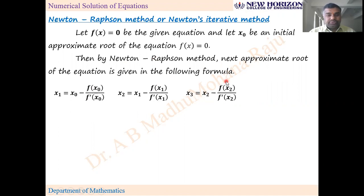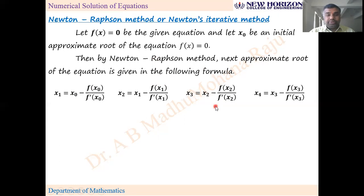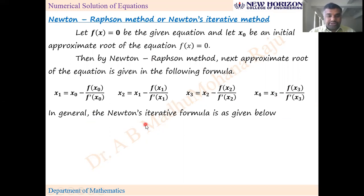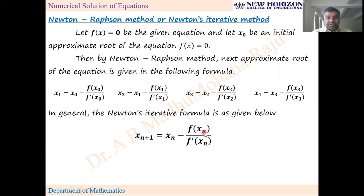x₃ = x₂ - f(x₂) / f'(x₂). This means the current root depends on the previous approximate root, that's why it is called Newton's iterative formula. In general, the Newton's iterative formula is: xₙ₊₁ = xₙ - f(xₙ) / f'(xₙ).